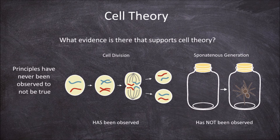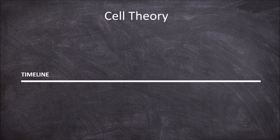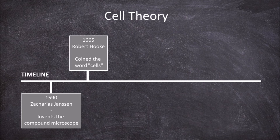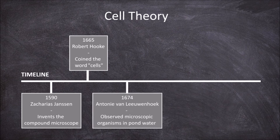The evidence that developed this theory occurred over time, starting with the invention of the compound microscope by Zacharias Janssen in 1590. In 1665, Robert Hooke used a light microscope to look at slivers of cork tissue from a plant, discovering tiny chambers that he called cells. In 1674, Anton van Leeuwenhoek observed living microscopic organisms in pond water, terming them animalcules.